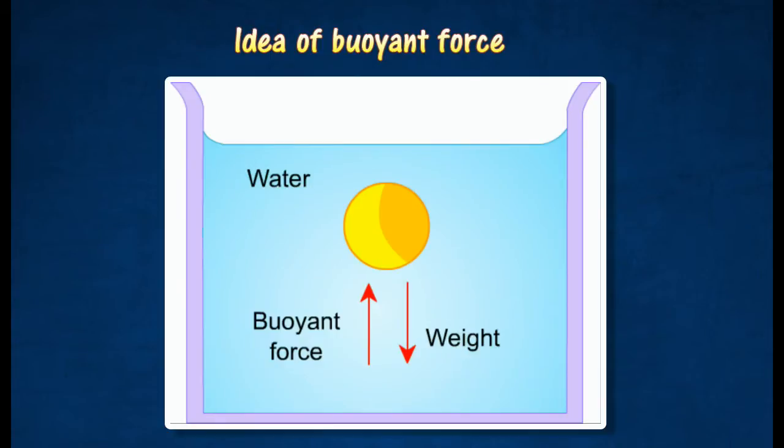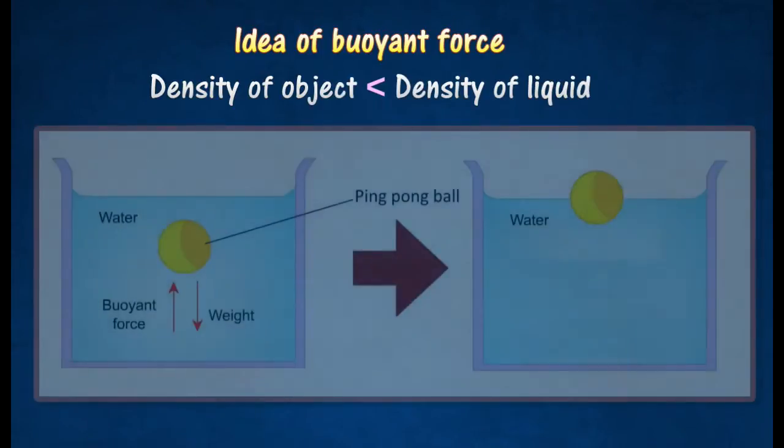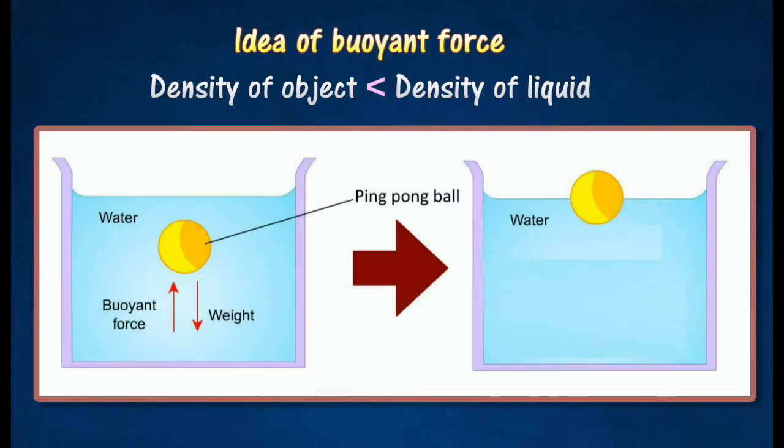When any object is placed in a liquid, whether completely or partially submerged, the liquid exerts a buoyant force upon the object. An object which has a density less than the liquid in which it is submerged will be subjected to a buoyant force which causes the object to float on the surface of the liquid.